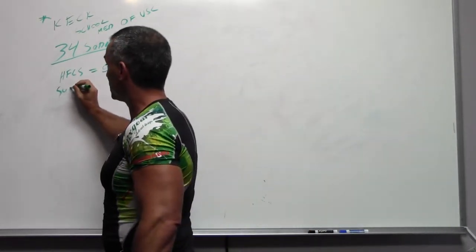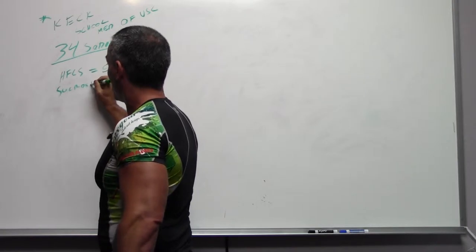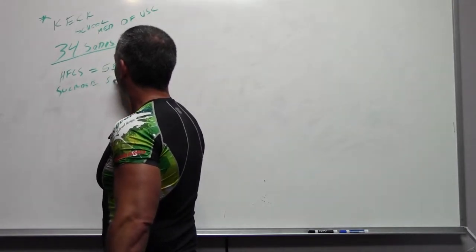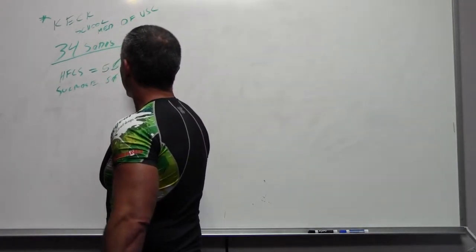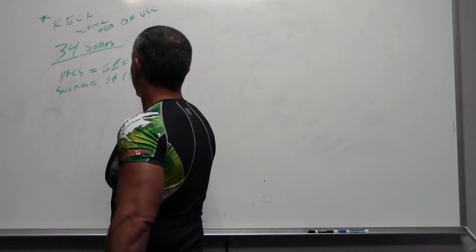55 fructose to 45 glucose. And they're saying that's close to table sugar. Table sugar being sucrose, which is a 50-50 blend.